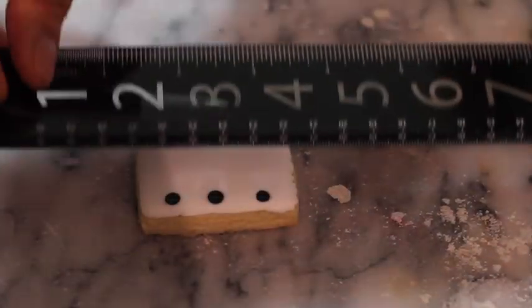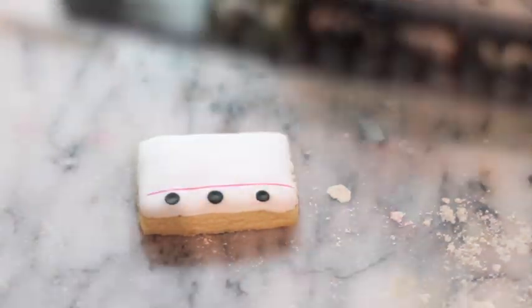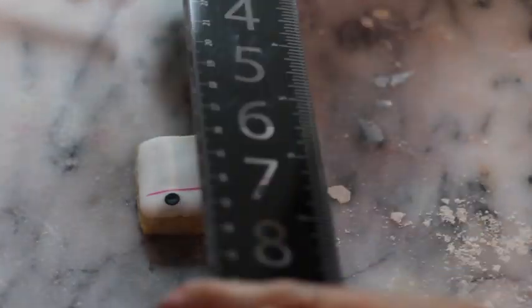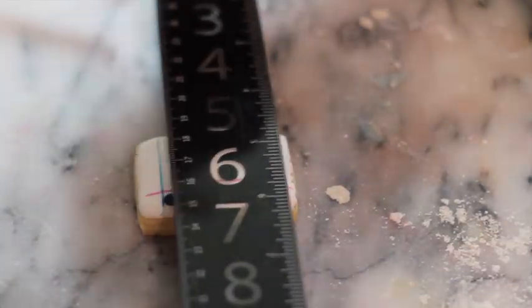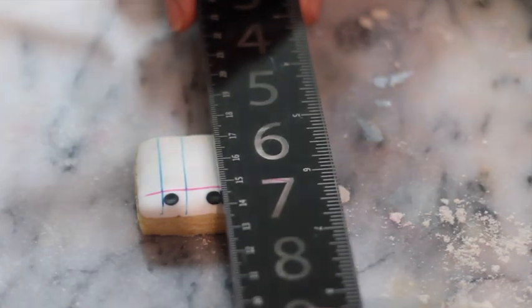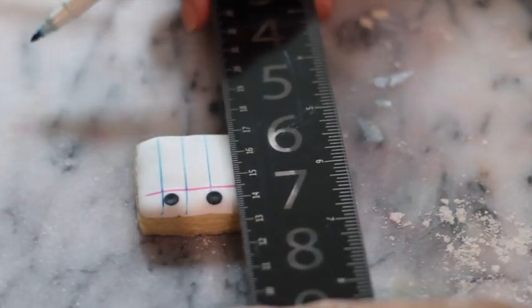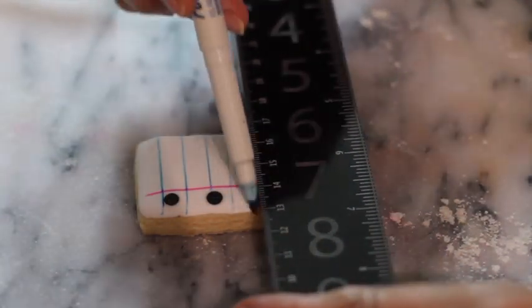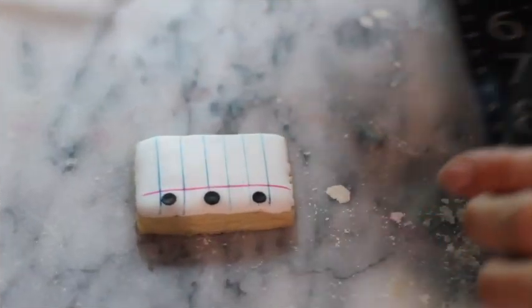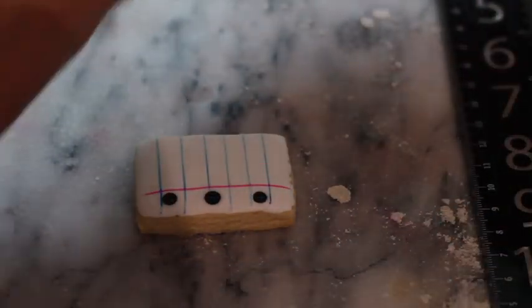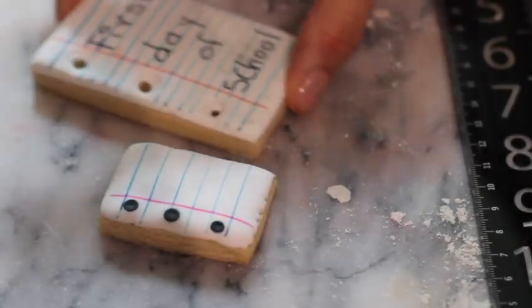Now, I am going to make the lines using the edible markers and a ruler. And that's it! This cookie is super simple and it looks super cool.